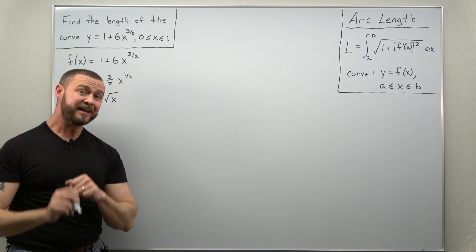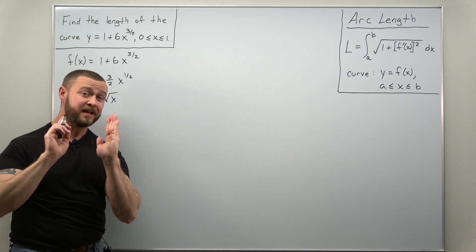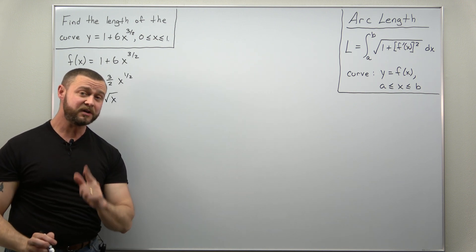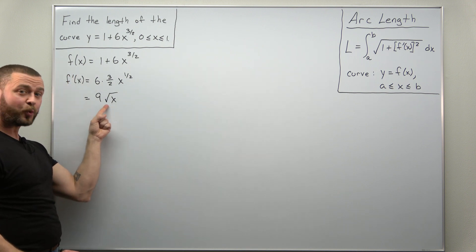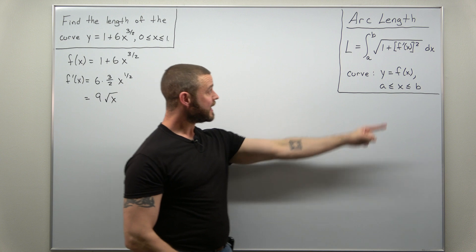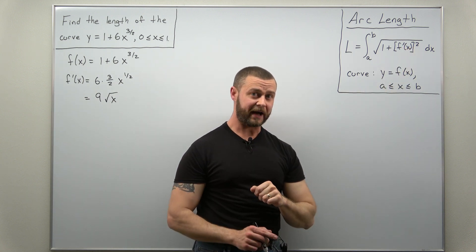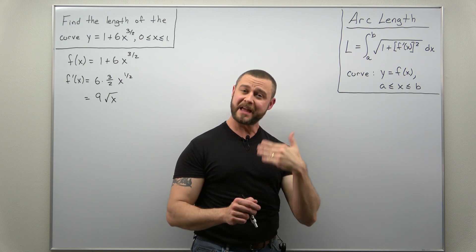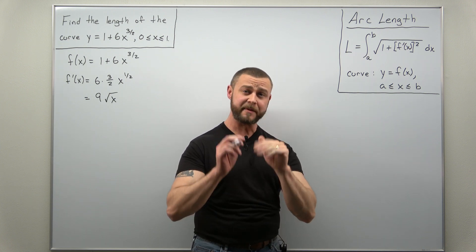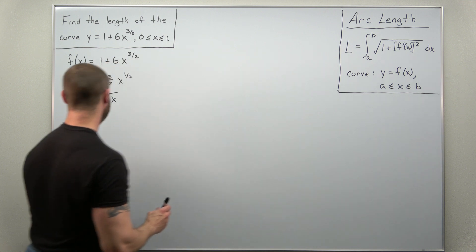And I'm going to write x to the 1 half as square root of x. You don't have to do that, but I like to do that because you're more easily able to recognize a square root and a square will cancel out. So rewriting that as the square root of x just makes some of the algebraic simplifications maybe a little bit more obvious.